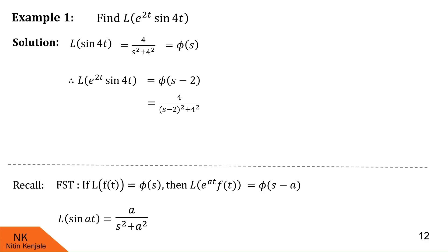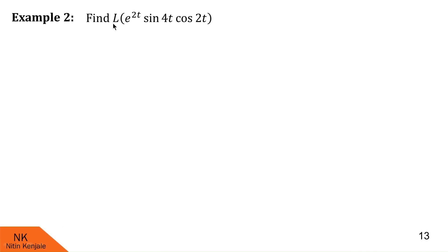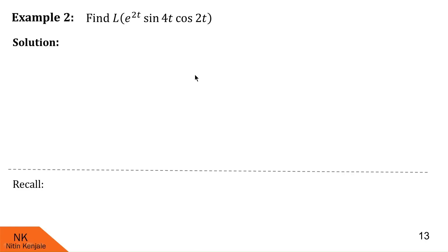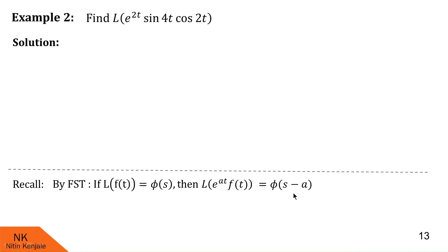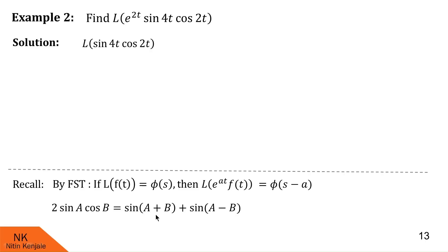Now let us proceed to the second example. We are asked to find Laplace of e raised to 2t into sin 4t into cos 2t. Recalling the first shifting theorem, f of t here is sin 4t into cos 2t. To find Laplace of sin 4t cos 2t, we use the trigonometric identity: 2 sin a cos b = sin(a+b) + sin(a-b). With a = 4t and b = 2t, we get a+b = 6t and a-b = 2t, so sin 4t cos 2t = (sin 6t + sin 2t) divided by 2.